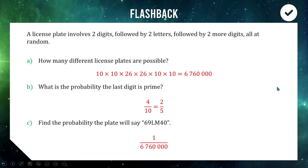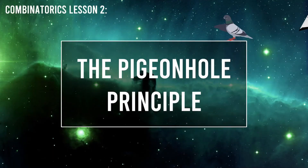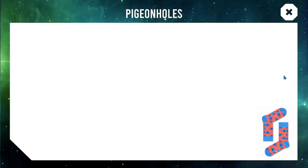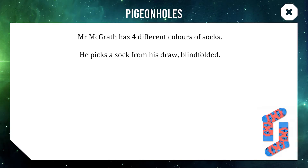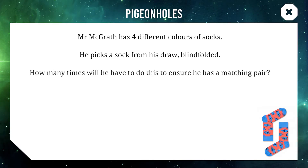Today's lesson is all about the pigeonhole principle in the Extension 1 course. To start, let's think about this question: I have four different colors of socks in my drawer and I'm drawing socks out blindfolded. The question is: how many times will I have to pick out a sock before I can confidently say I have a matching pair somewhere in my hand?